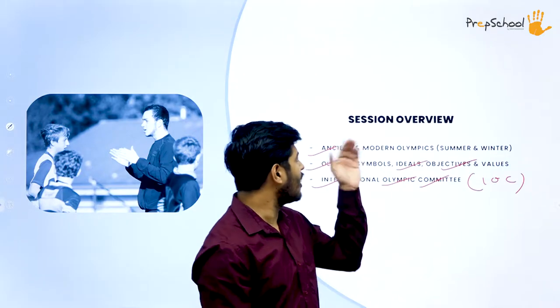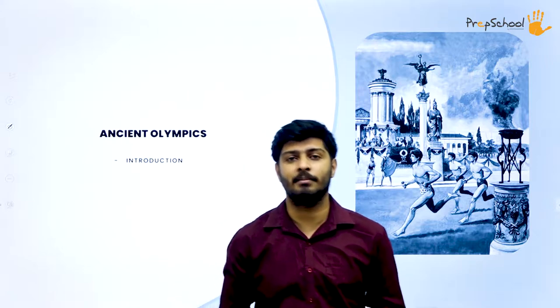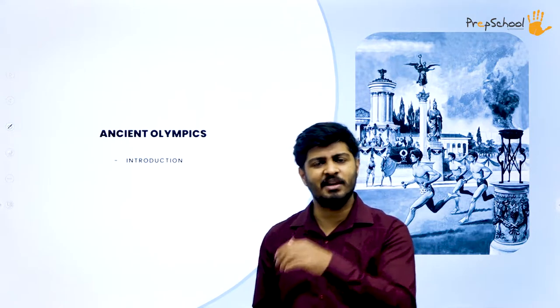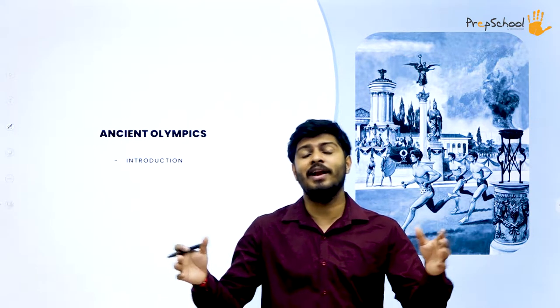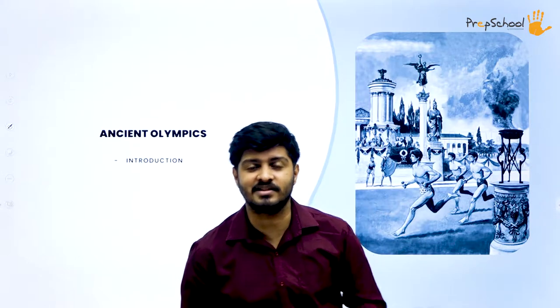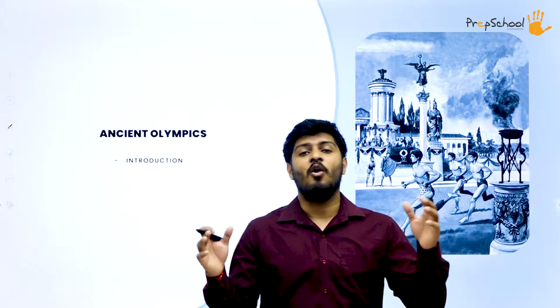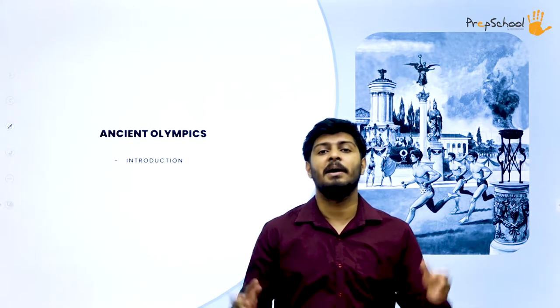Let's start off with our first topic that is ancient Olympics. When somebody asks you about Olympics and when it started, the date and place that comes to your mind is 1896 Athens Olympics. But that's not the truth. The Olympics started way back in Greece, in the village of Olympia, in 776 BCE.